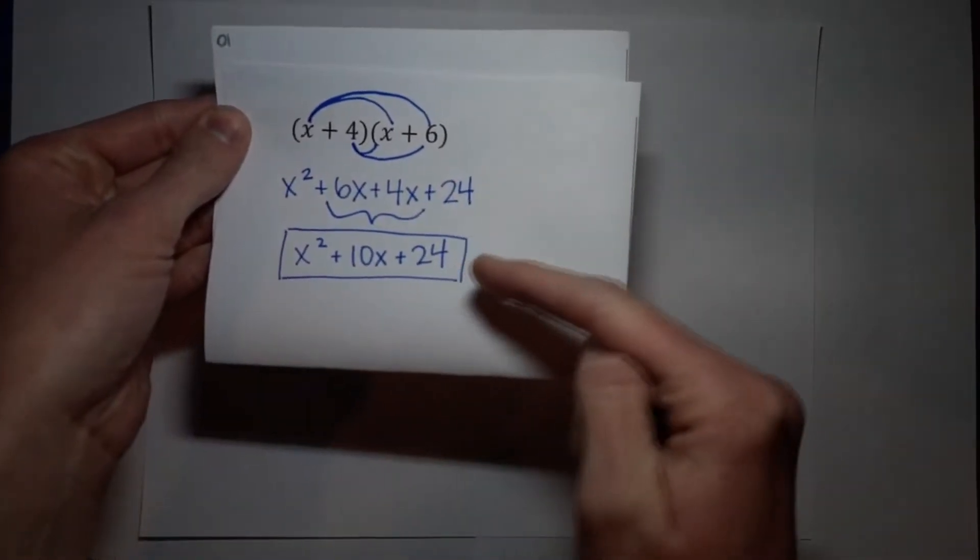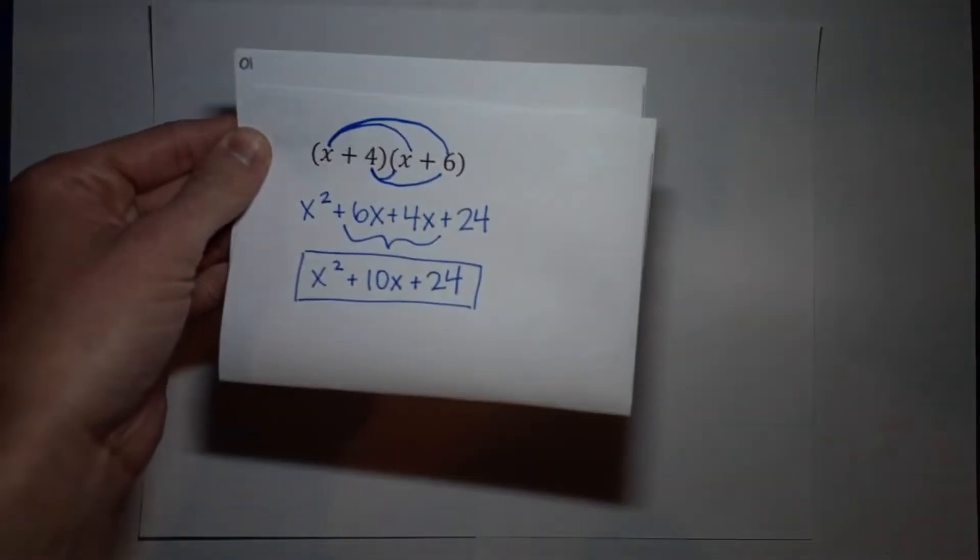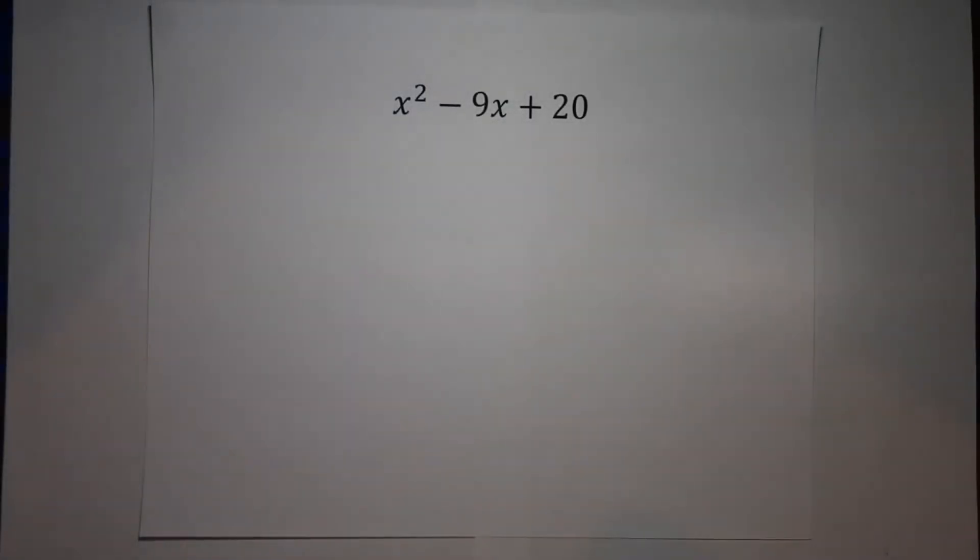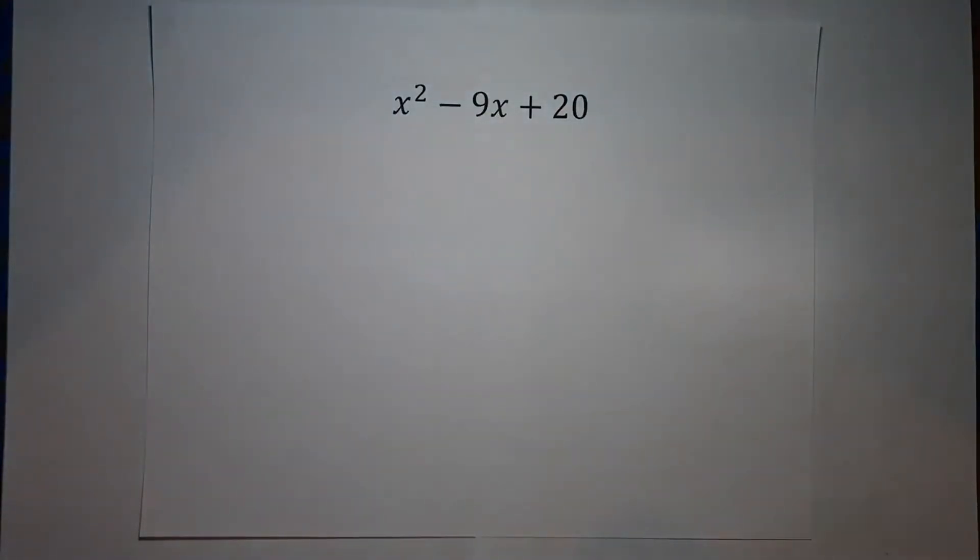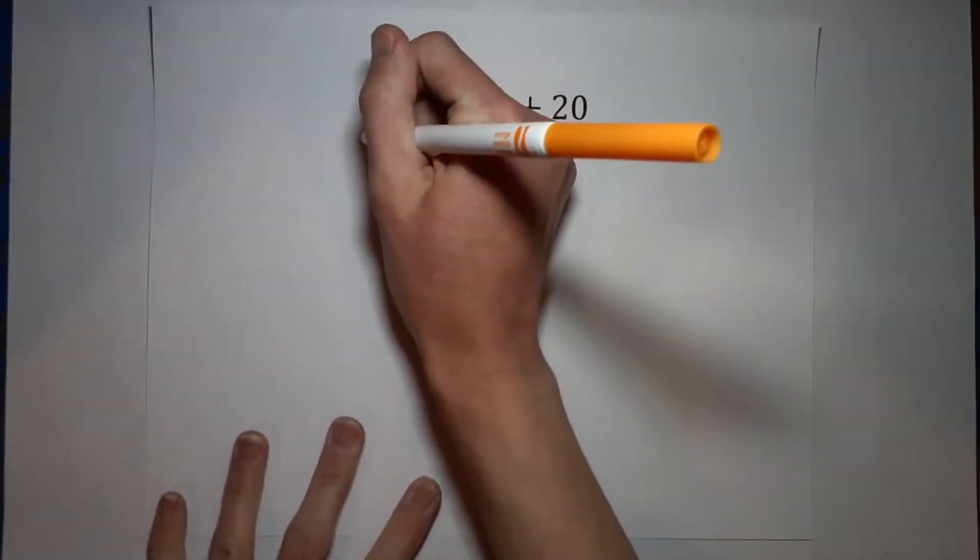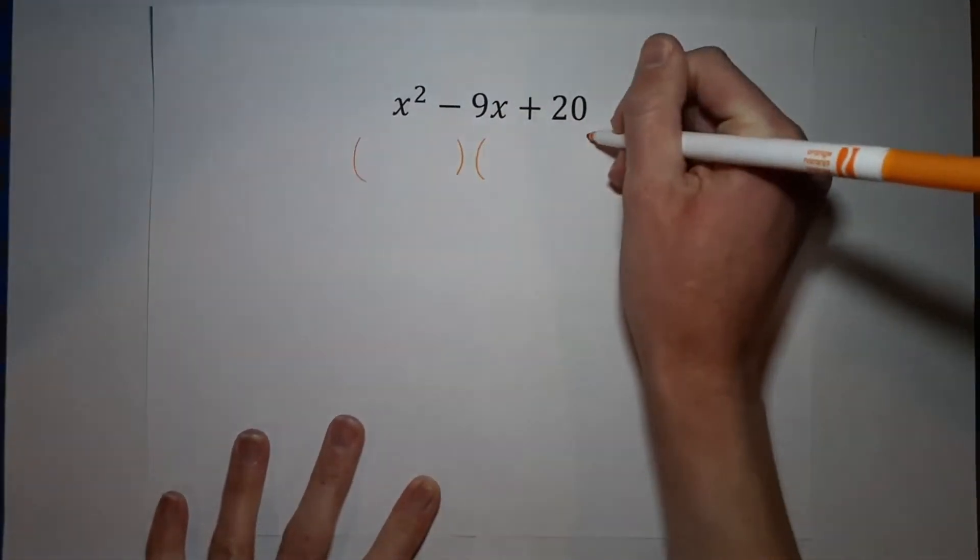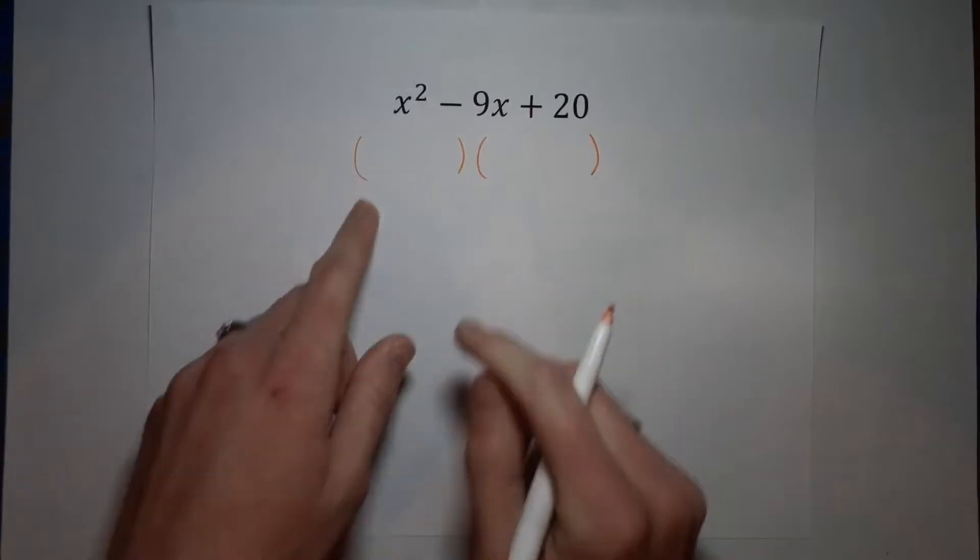We are just doing the opposite. So now we are going from here to here, but we're doing a different problem. We want to know the two parentheses that will be multiplying together to give me this. So in the end, we hope to have two parentheses multiplied by each other.